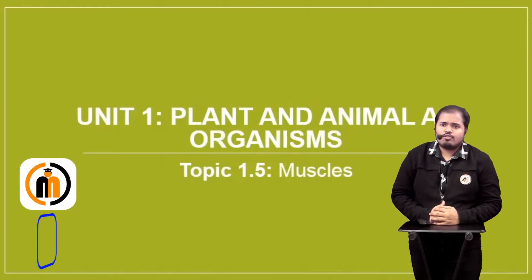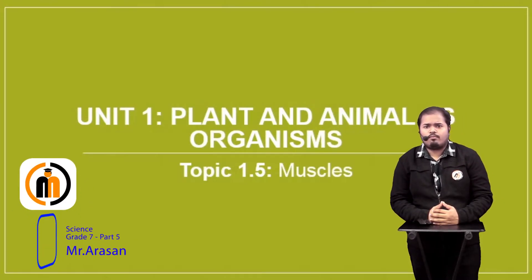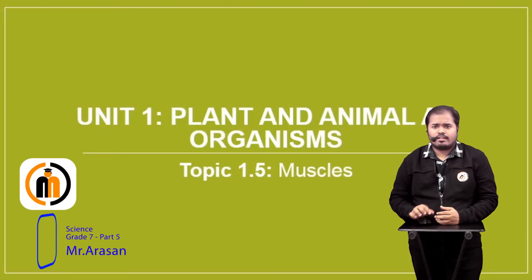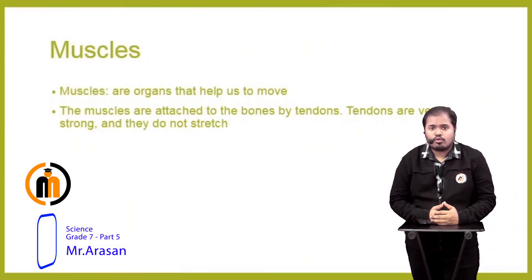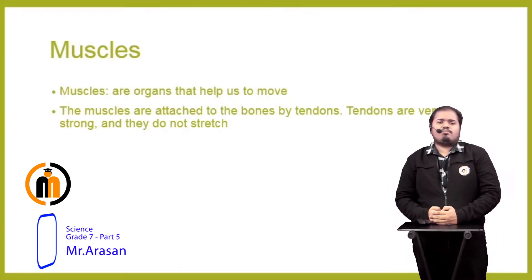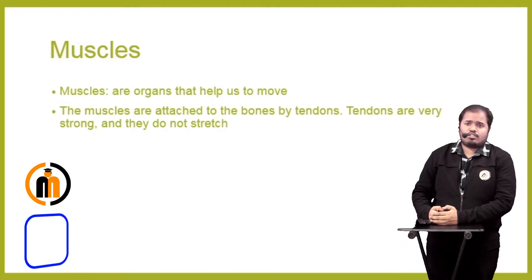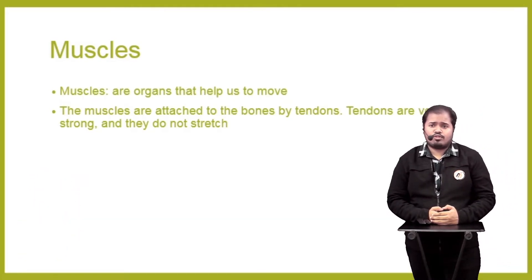Today we are going to see about topic 1.5: muscles, from unit 1. Muscles are an organ that help us to move. Without muscles, bones are not capable of moving as we desire. Muscles are attached to the bones by tendons. Tendons are very strong and they do not stretch.